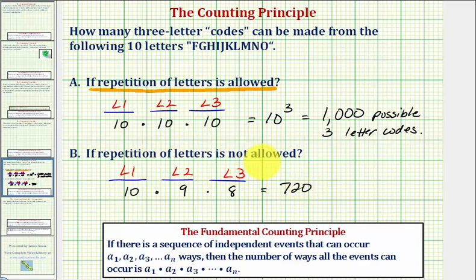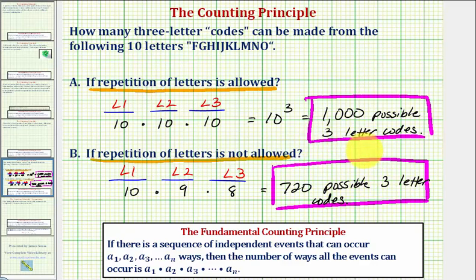So if repetition is not allowed, there are only 720 possible three-letter codes. So it's always important to make sure we know whether repetition is allowed or not in these types of problems. I hope you found this helpful.